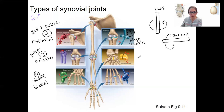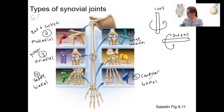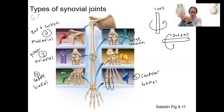Then there's another type of biaxial joint: the condylar joint. This is also biaxial. This covers the rest of your fingers and actually your toes as well. We're talking about the base of the finger — that metacarpophalangeal joint. It can move in two planes: flexing and extending your finger, and also moving sideways. That's the condylar joint.